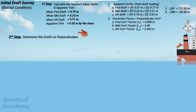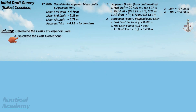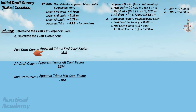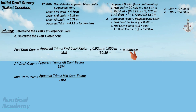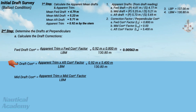To determine the drafts at perpendiculars, we first calculate the draft corrections. For the forward draft correction, it equals the apparent trim (0.92 meters) multiplied by the forward correction factor (0.800 meters), divided by the length between draft marks (130.800 meters). The forward draft correction is 0.00563 meters. For the aft draft correction, the same formula applies but using the aft correction factor. The aft draft correction is 0.03798 meters. The midship draft correction is 0, since the midship draft mark is exactly at midships.